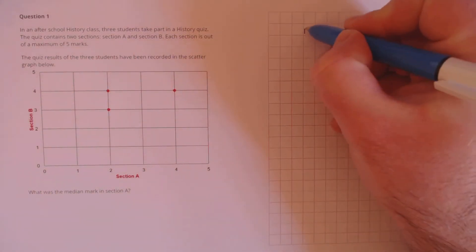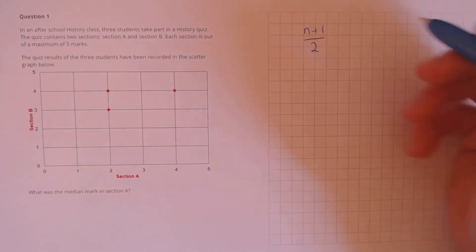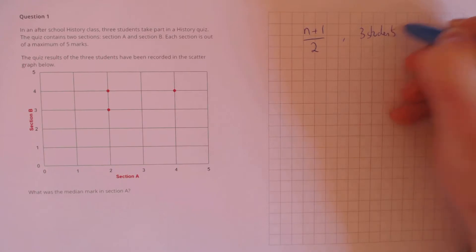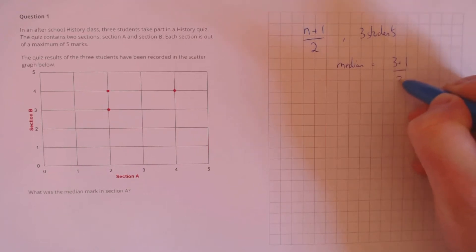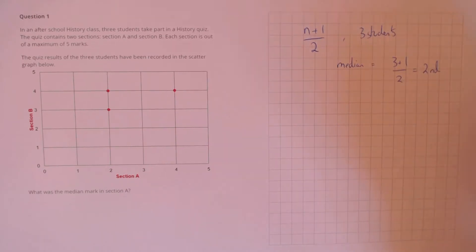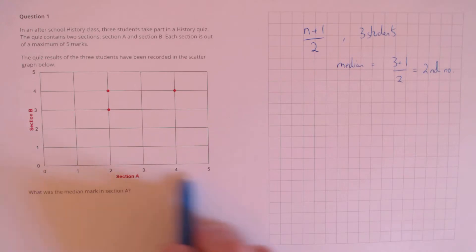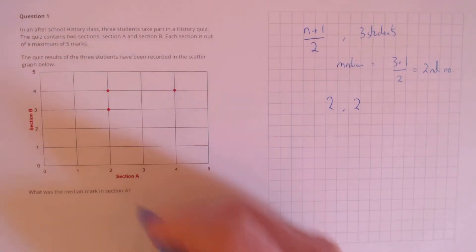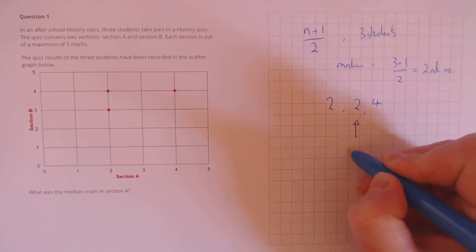The median is always the (n+1)/2 th number when the data points are in ascending order. In this case we have three students, so the median is the (3+1)/2 = 4/2, so it's the second number. If we sort these points in ascending order using this axis, the first point is 2, the second point is also 2, and the next point is 4. So the median mark is 2.